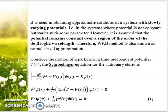In systems where potential is not constant, it varies with some parameter. However, the variation is not unlimited. There is restriction to what order or how much it can vary. The variation range is limited up to a certain order of the de Broglie wavelength.